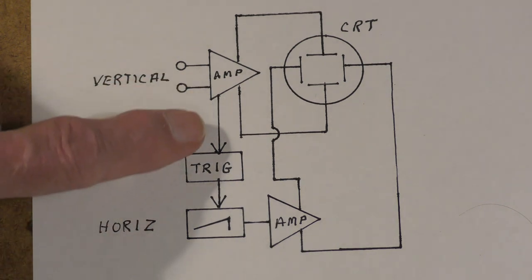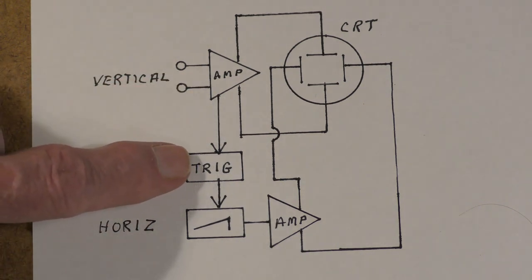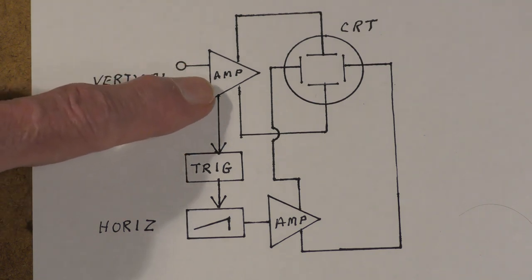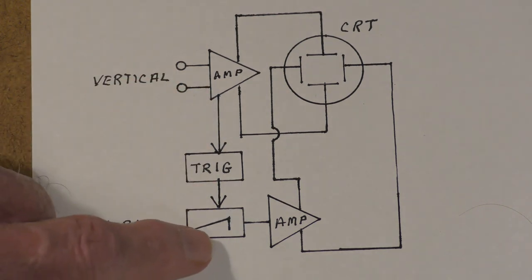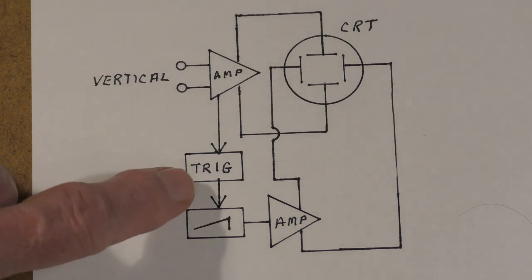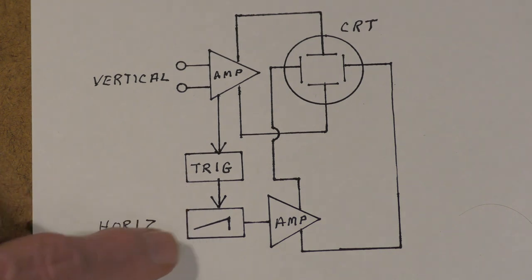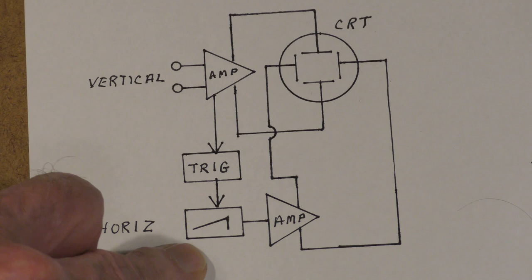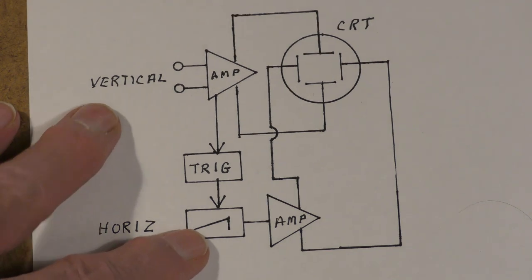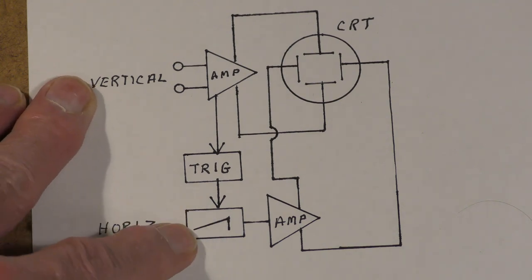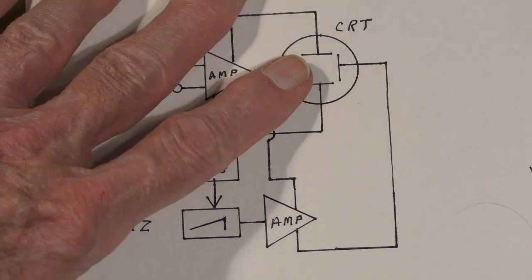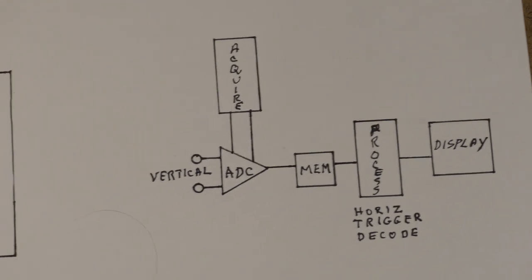The result was that you set the horizontal time base to sweep at the rate you wanted it to display the vertical signal. A portion of the vertical signal was tapped off to a trigger circuit to find the right spot on the input waveform to start the waveform generator or the ramp generator. And you notice that one of the weaknesses of this is because the sweep doesn't start until the trigger occurs you can't see any of the data before the trigger.